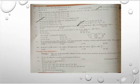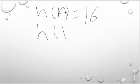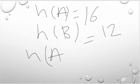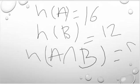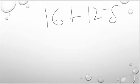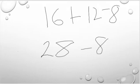If A and B are two sets such that n(A) = 16, n(B) = 12, and n(A∩B) = 8, then n(A∪B) equals 16 plus 12 minus 8, which is 28 minus 8, that is 20.